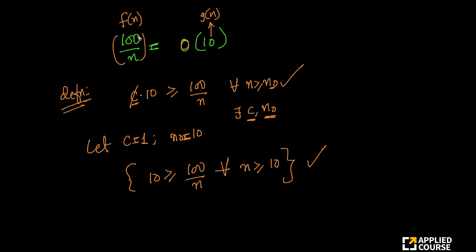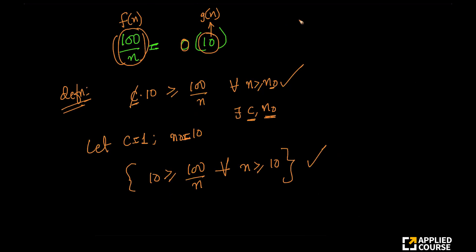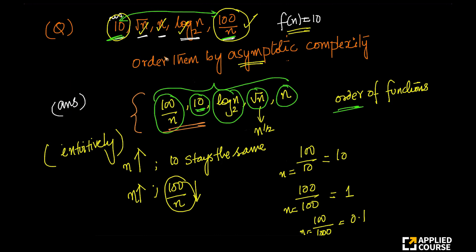This means 100 by n is going to grow slower, or at the same rate, as a constant — which means when you start ordering them, you can order them this way. Very simple idea. You can also prove that 100 by n is small o of 10 as well, not very difficult by just using the formula of small o. So the only tricky or confusing part for many people would be comparing 10 with 100 by n.